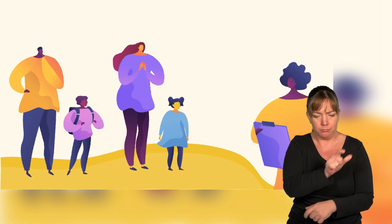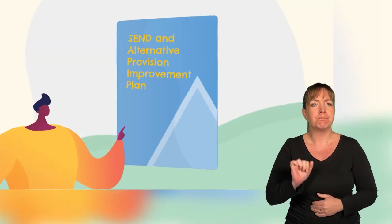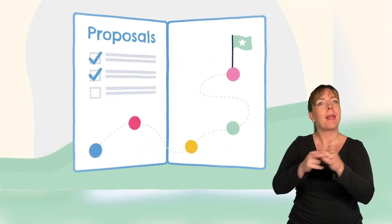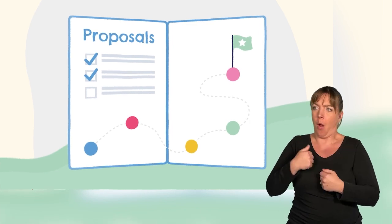We heard that the proposals must support a system which is more responsive to children's individual needs, and allows families to get the support they need quickly. This feedback is reflected in the SEND and Alternative Provision Improvement Plan, which sets out how we intend to take these proposals forward.